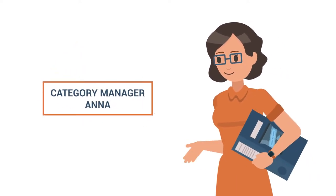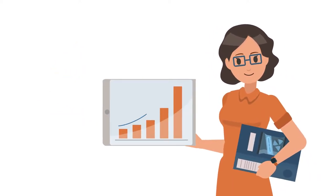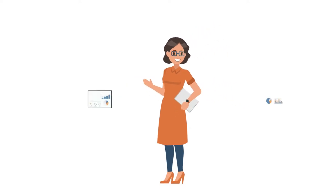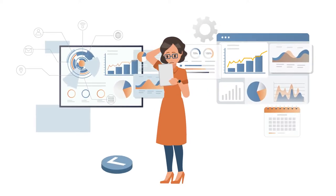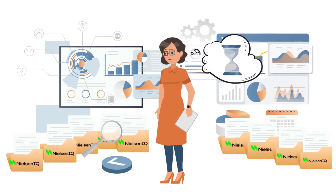This is Anna. She is a category manager in a fast-moving consumer goods company. An important part of Anna's job is to keep up with the performance of her categories and brands. But this process takes a lot of her time.